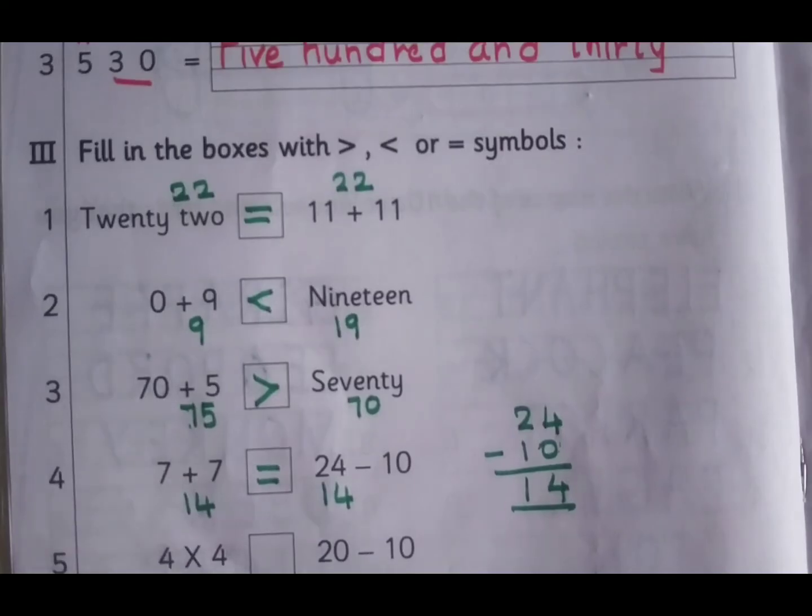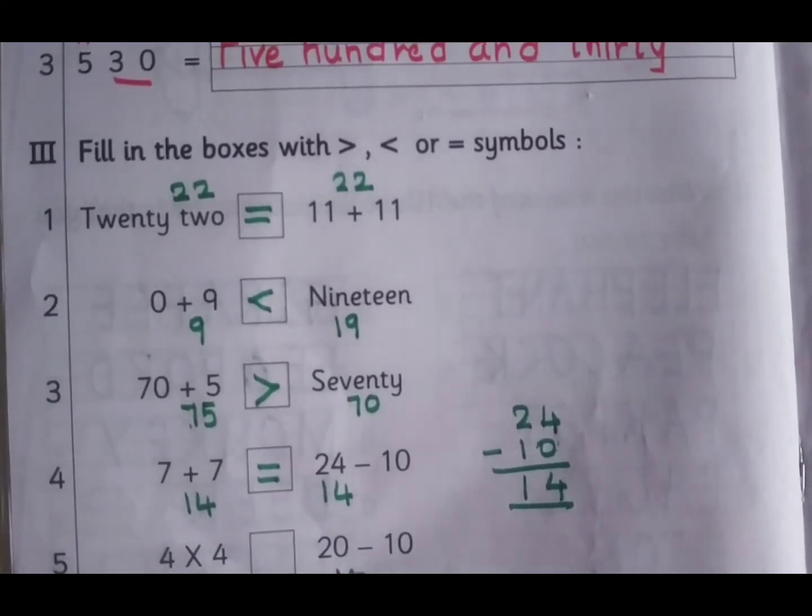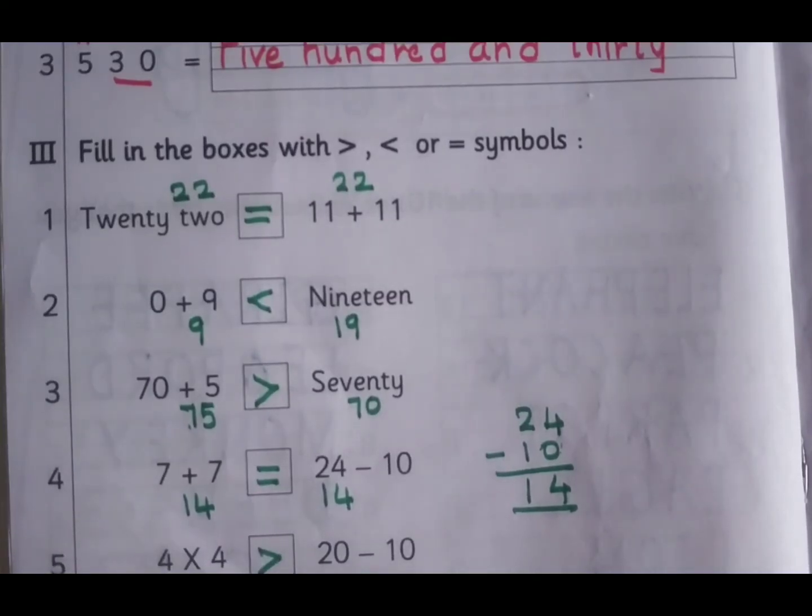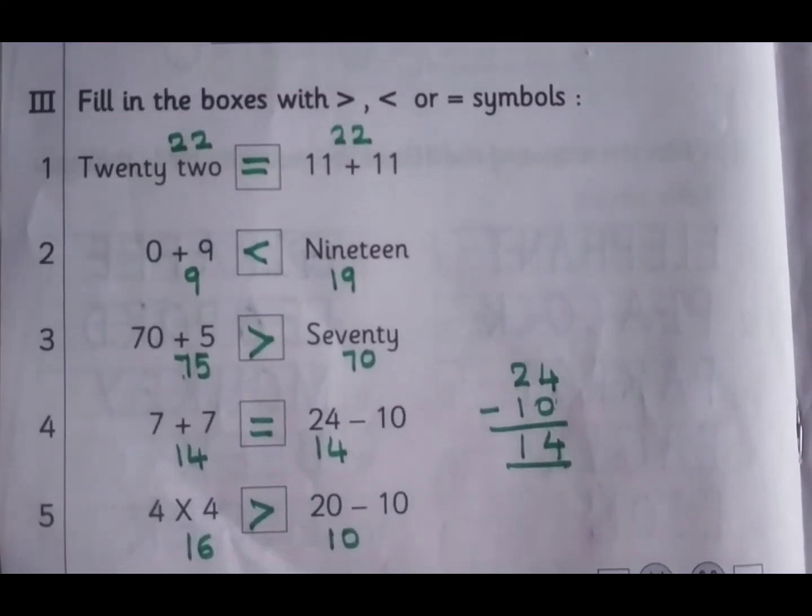4 times 4 is 16, 20 minus 10 is 10, 16 is greater than 10.